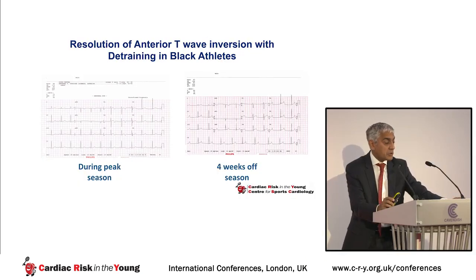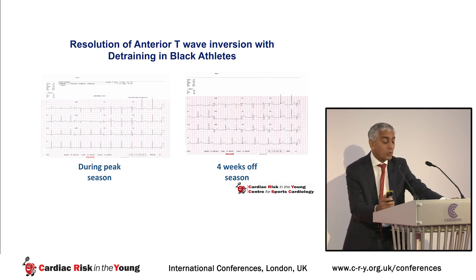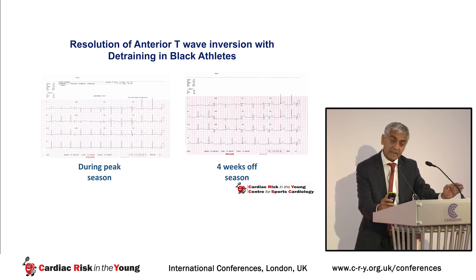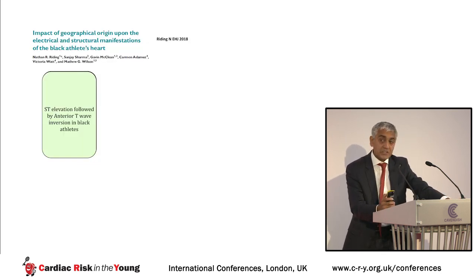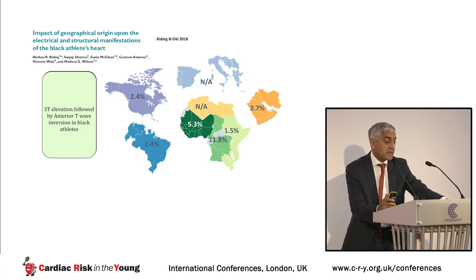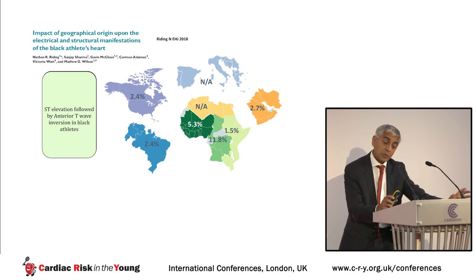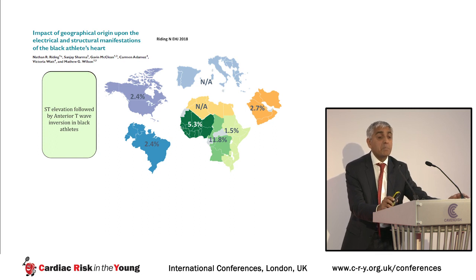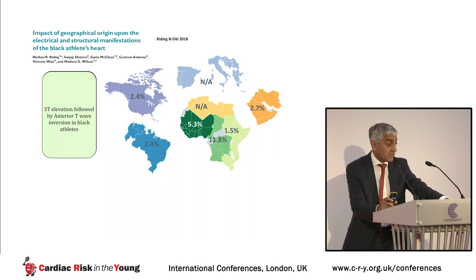Black people come from all over the world, and current experience suggests that it is black athletes from West Africa and Middle East Africa who seem to have the highest prevalence of T wave inversion. In the UK, we are likely seeing more T wave inversion because most black athletes originate from Nigeria or Ghana rather than Kenya or Tanzania.